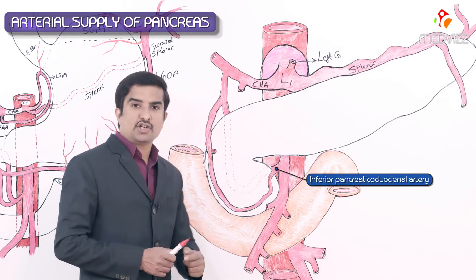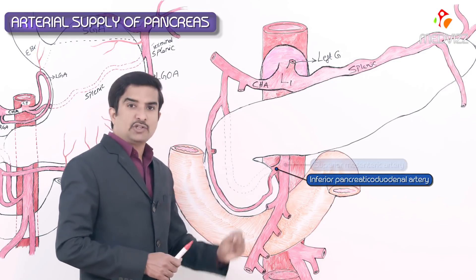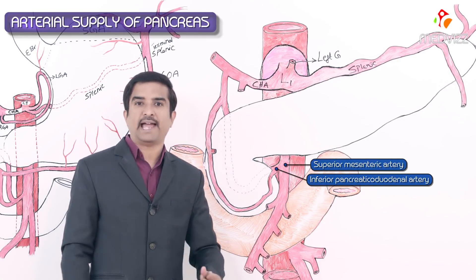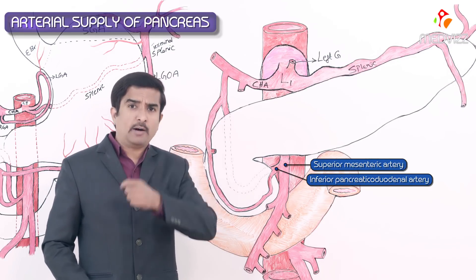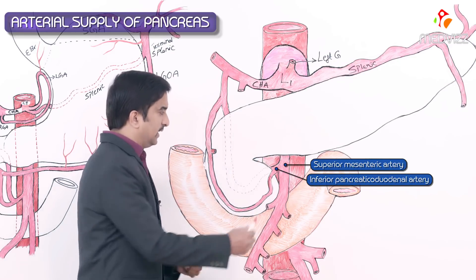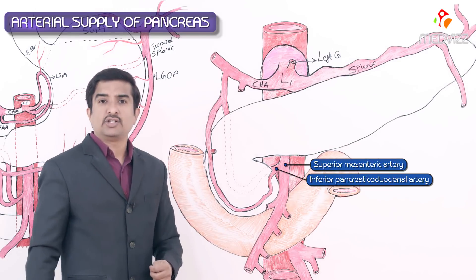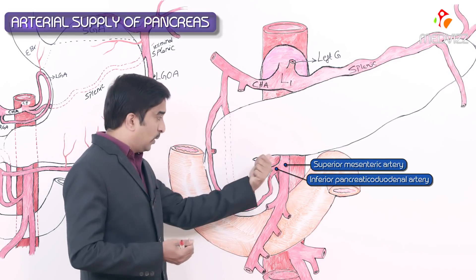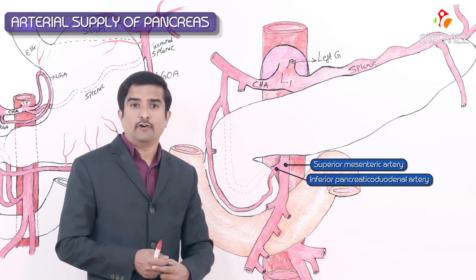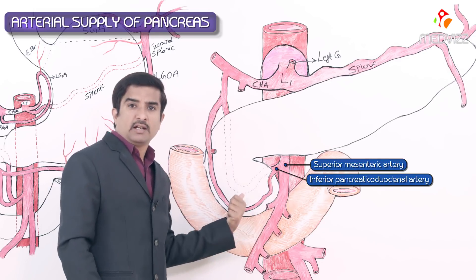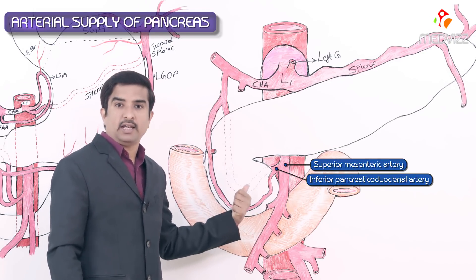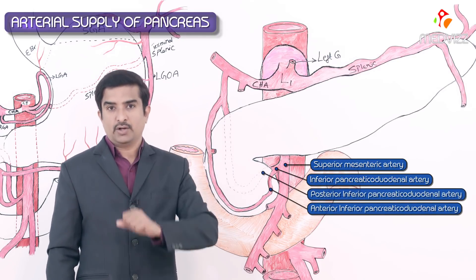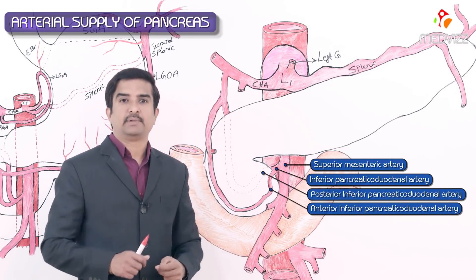The inferior pancreaticoduodenal artery usually arises from the superior mesenteric artery at the inferior border of the pancreas, often as a common vessel with the first jejunal artery. It mainly arises from the posterior or left aspect of the superior mesenteric artery, where it divides into anterior and posterior inferior pancreaticoduodenal arteries.